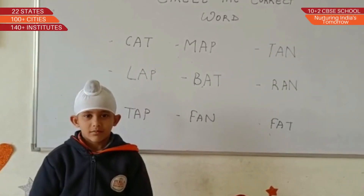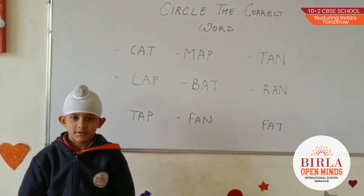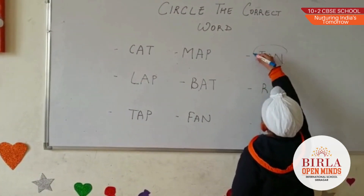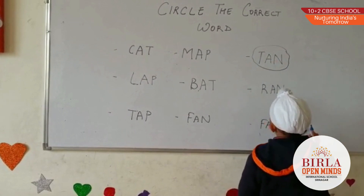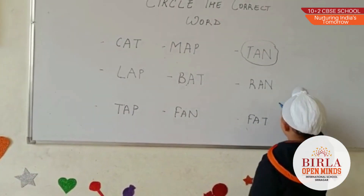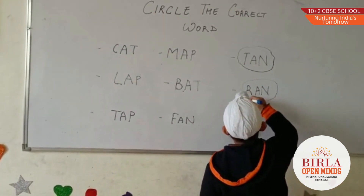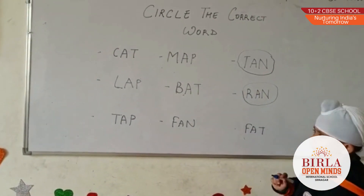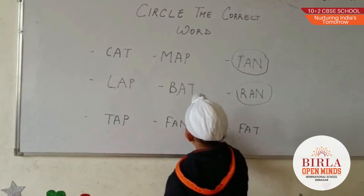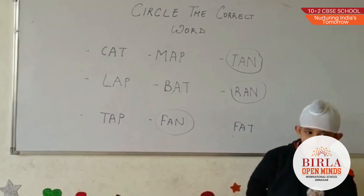Harjot. What activity are we doing today? Can you circle AN family? Very good. Rand. Rand. Next. Rand. Thank you.